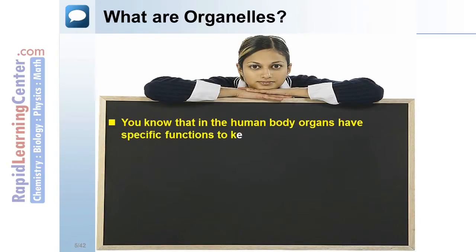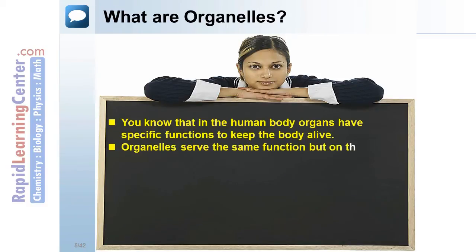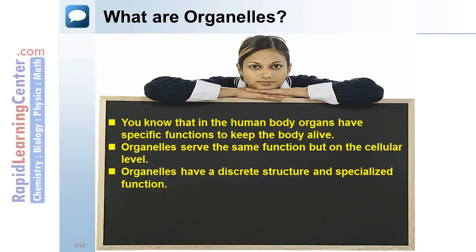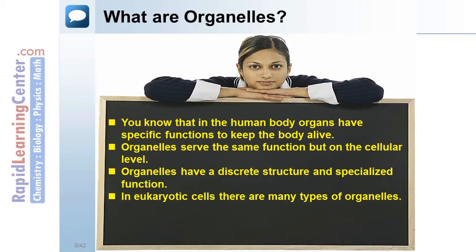You know that in the human body organs have specific functions to keep the body alive. Organelles serve the same function but on the cellular level. Organelles have a discrete structure and specialized function. In eukaryotic cells there are many types of organelles.